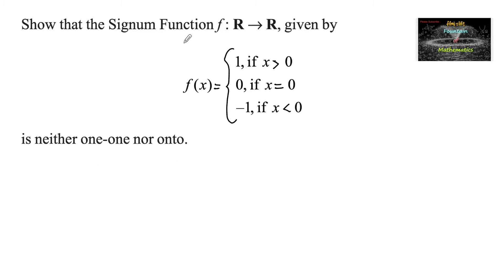Let us discuss about signum function regarding one-one and onto. We know that signum function gives the values either minus 1, 0, or plus 1. For x equals 0 it is 0, for x greater than 0 it gives 1, and for x less than 0 it gives negative 1.